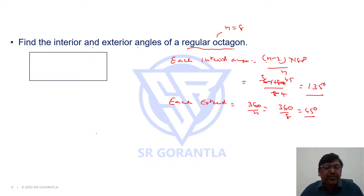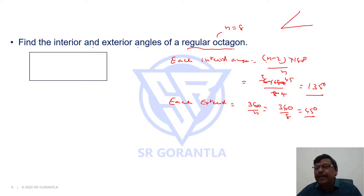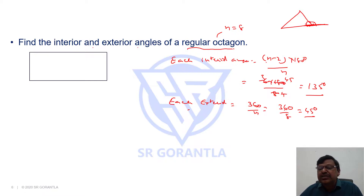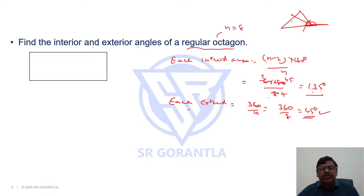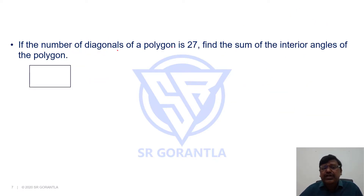Each exterior angle = 360 / n = 360 / 8 = 45 degrees. Now, an important tip: at any vertex of a polygon, interior angle plus exterior angle equals 180 degrees, forming a straight line. So once you know the exterior angle is 45 degrees, the interior angle is simply 180 − 45 = 135 degrees. This saves calculation time. So interior angle = 135 degrees, exterior angle = 45 degrees.